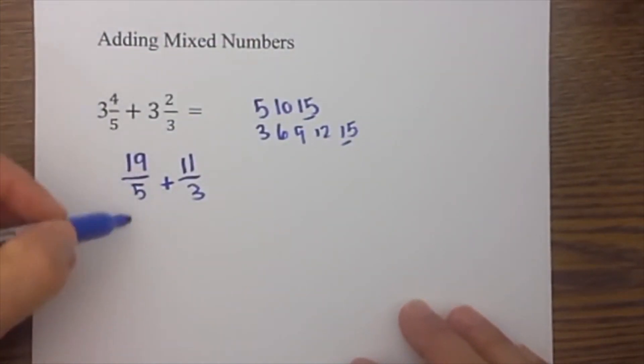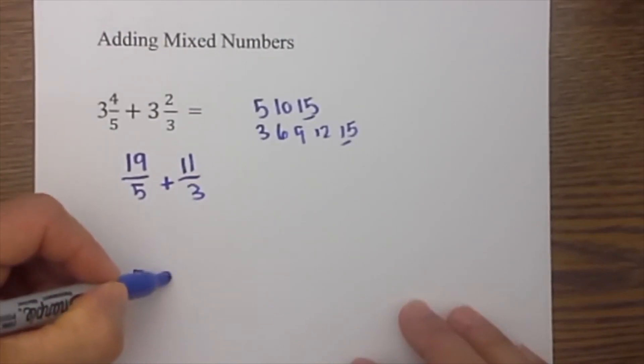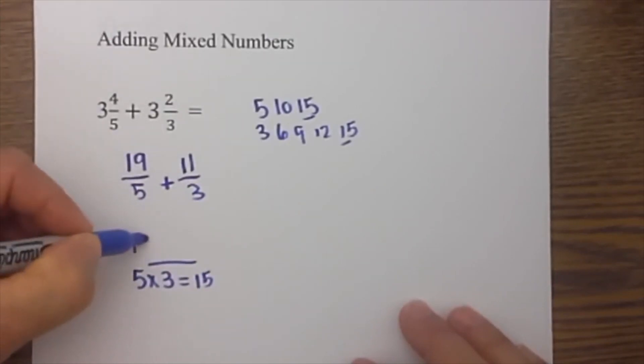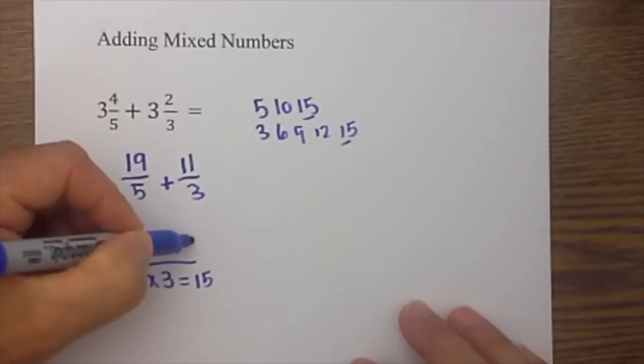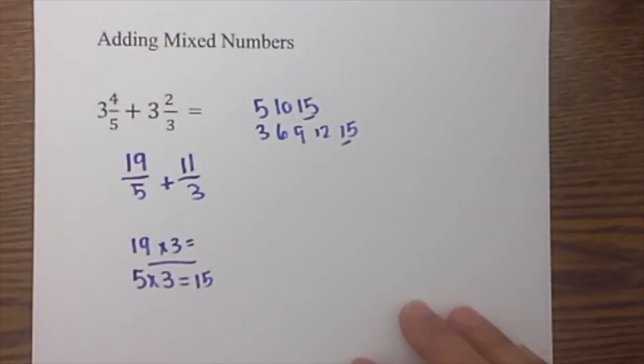I then rewrite this. I'll go 5 times 3 equals 15, then do the same for 19 times 3 equals 57.